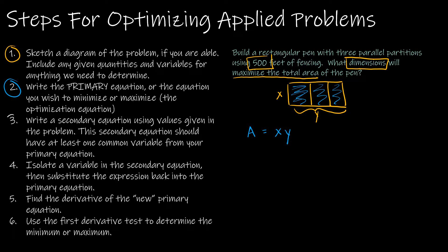Step three: write a secondary equation using any information we haven't used yet. The only thing we really haven't used is that we have 500 feet of fencing. Looking at my picture, I know I'm going to have x fencing on four sides and y fencing on two sides, so the secondary equation is 4x + 2y = 500.